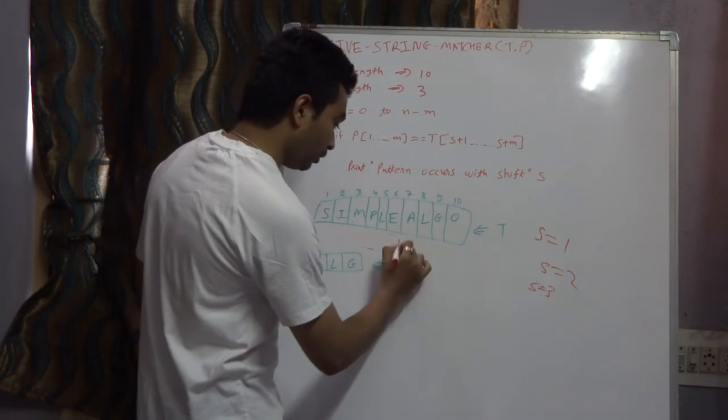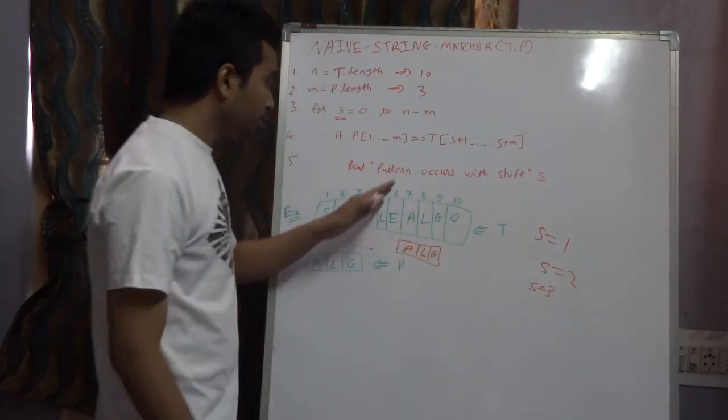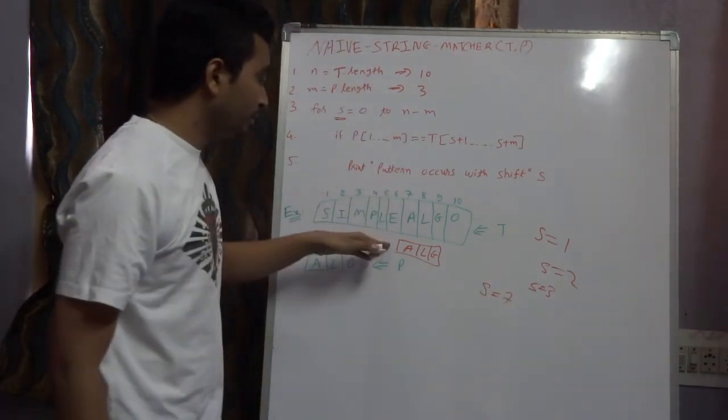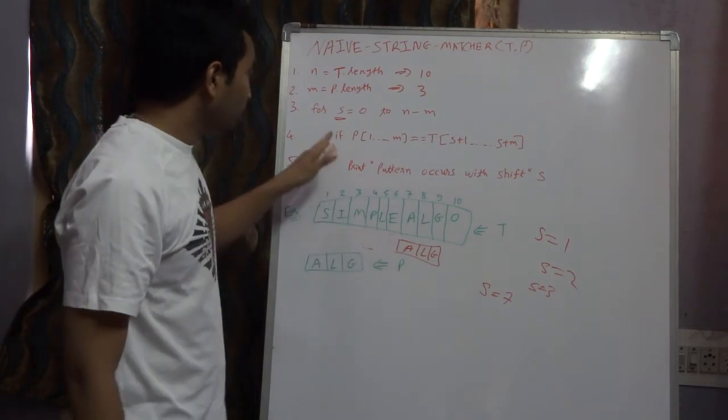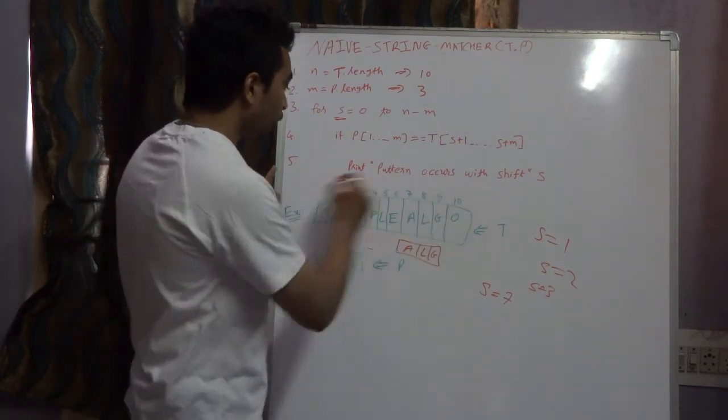At the point when the shift is 7, or we can say the value of S is 7, the pattern occurs. So the output of this algorithm is S equals 7, because at the 7th position the pattern matches.